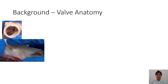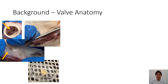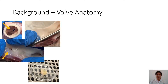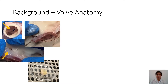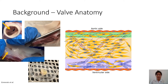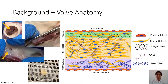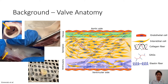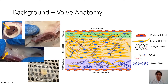Most aortic valves consist of three leaflets; some people are born with two and maybe a few with four. Each leaflet contains ventricularis, spongiosa, and fibrosa layers. The ventricularis consists of mainly elastin fibers and faces the heart's ventricle. The fibrosa contains mainly collagen and faces the aorta. The spongiosa is sandwiched in the middle and consists mainly of glycosaminoglycans, or GAGs. Both surfaces are covered with a monolayer of valve endothelial cells, with valve interstitial cells inside the layers.